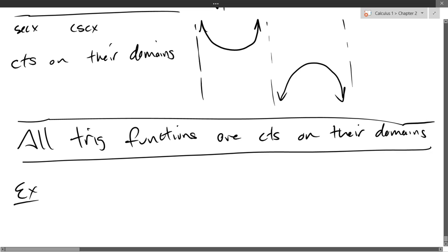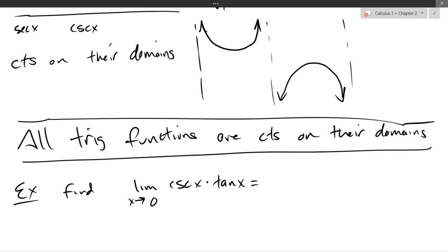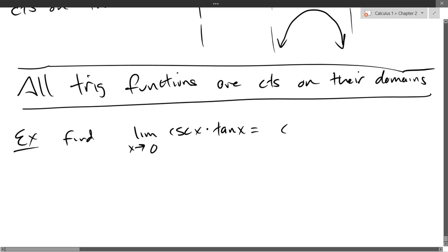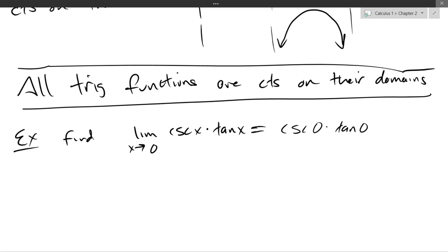We'll do one more limit before we leave this section. Cosecant and tangent are individually continuous on their domains, which means their product is continuous — products of continuous functions are continuous. The only question is: is zero in the domain of both cosecant and tangent? These will be equal if zero is in the domain of both of those functions; otherwise, we may have to work a little harder.